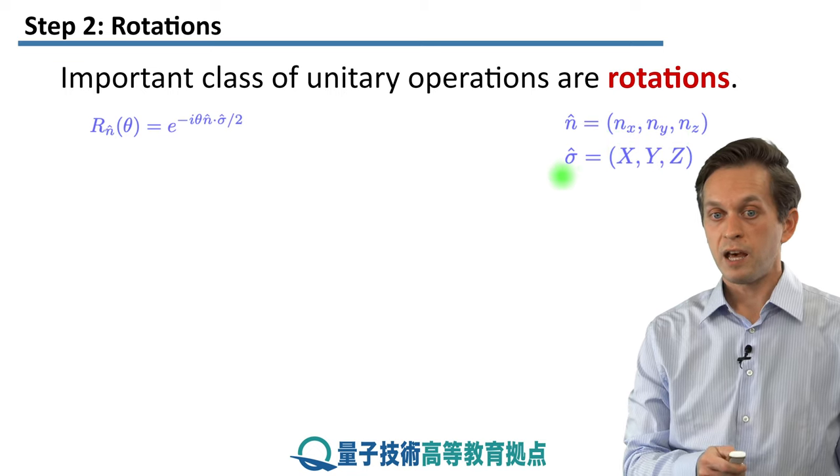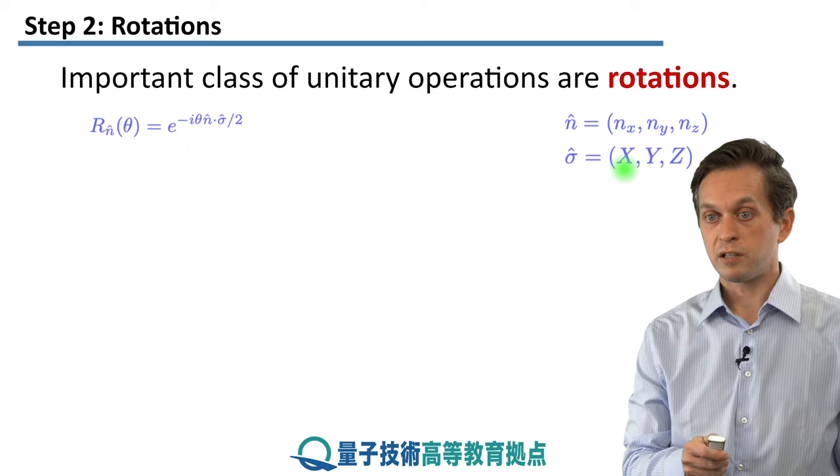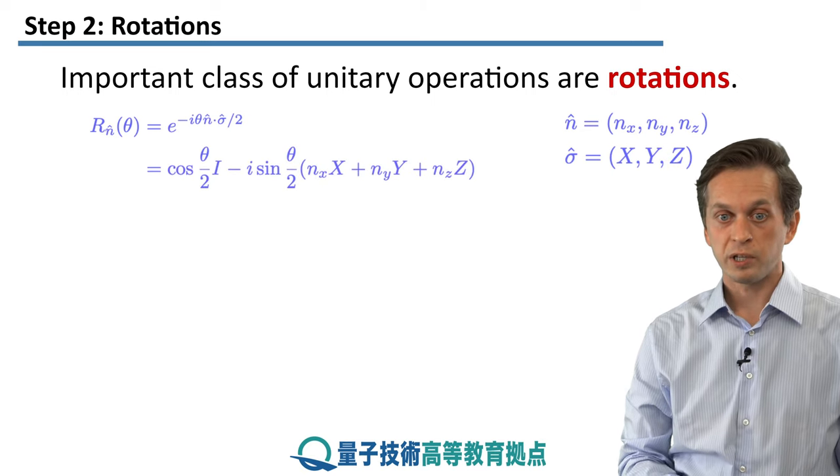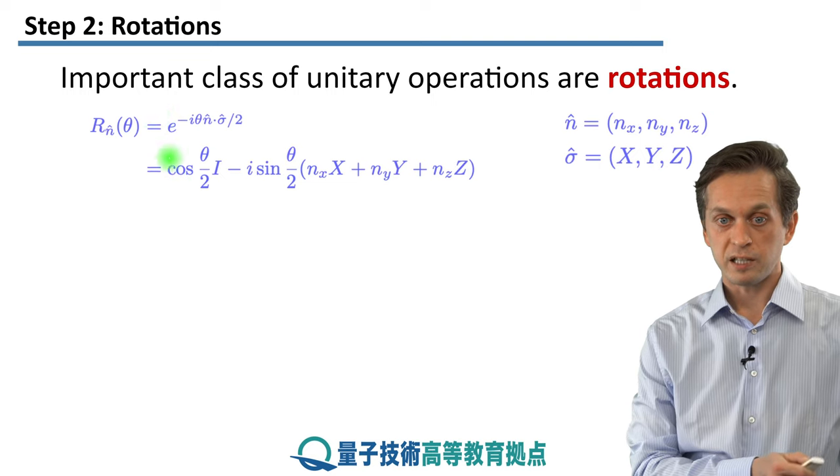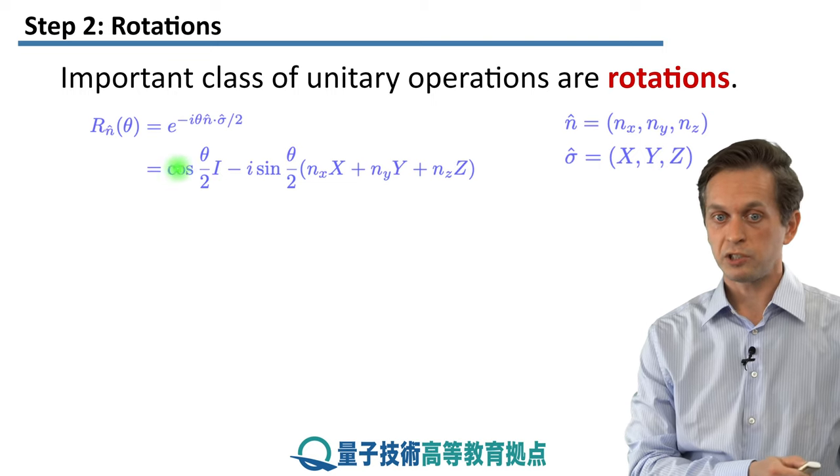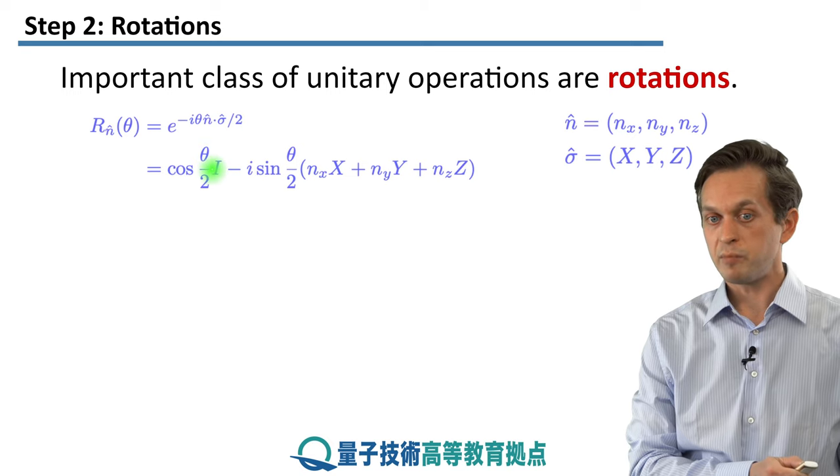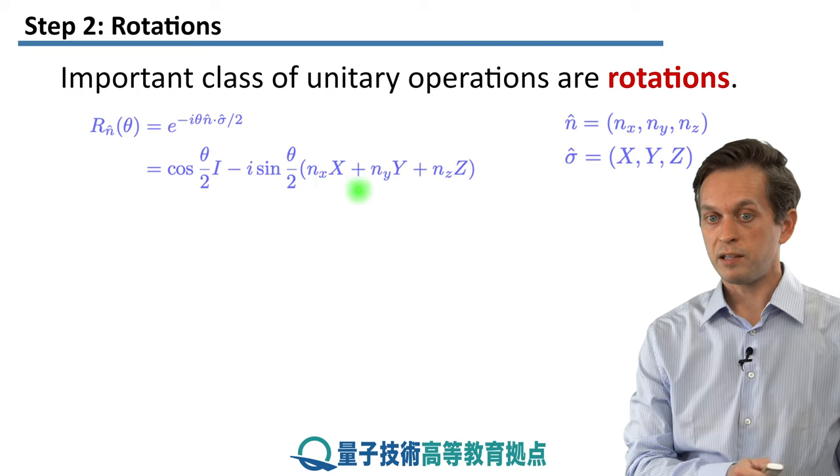And we write this as this following exponent. So here n̂ is just a unit vector given by coordinates nx, ny, and nz. And this vector given by σ̂ is just a vector of our Pauli matrices X, Y, and Z. So we can write this as follows.